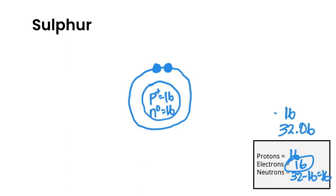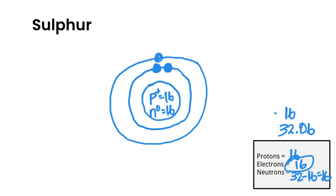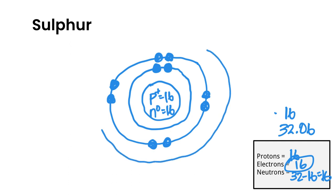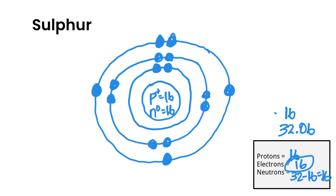We need to place 16 electrons. The first shell takes two, leaving 14 more, so we draw a second shell and fill it with eight electrons — bringing us to 10 total. We draw a third shell and place the remaining six electrons — one, two, three, four, five, six. Always double-check that the number of dots matches your number of electrons, which it does, so that is the correct Bohr-Rutherford diagram for sulfur.